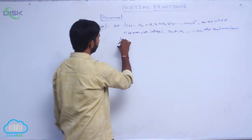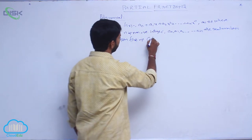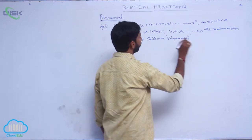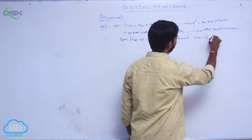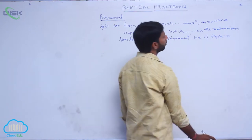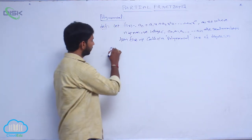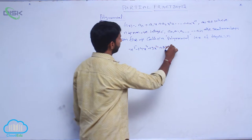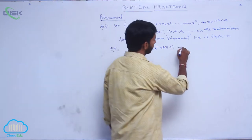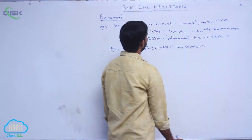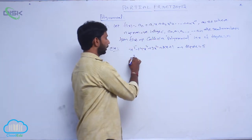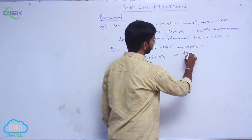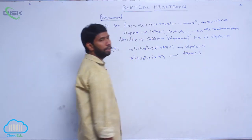Then f of x is called a polynomial in x of degree n, where n is a non-negative positive integer. For example, x power 5 plus 4x power 4 plus 3x squared plus a2x plus 4 is a polynomial of degree 5. And x cubed plus 3x squared plus 6x plus 9 is a polynomial of degree 3.